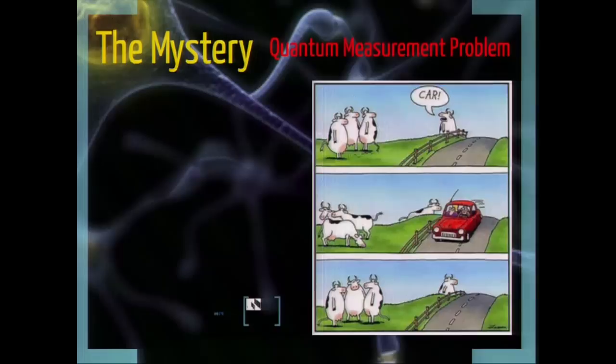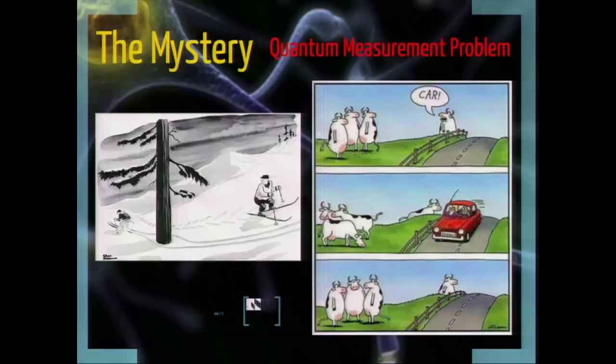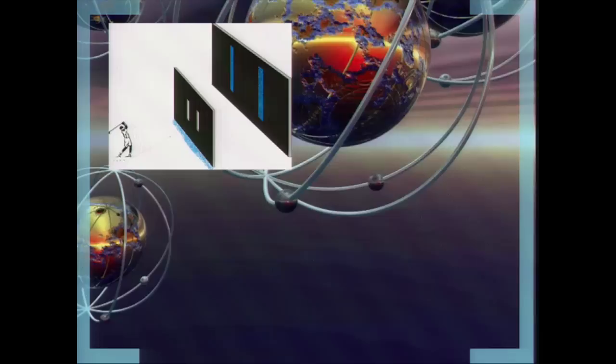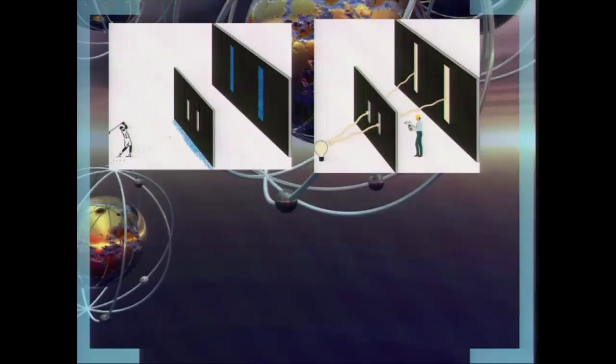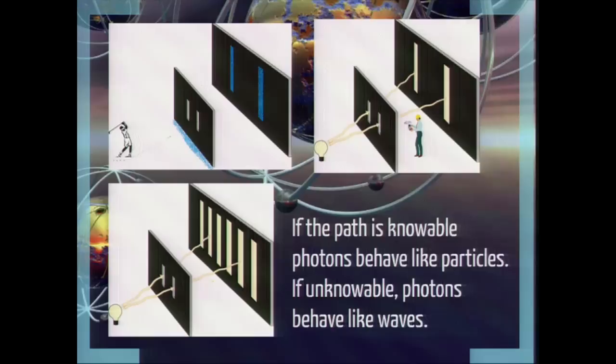If you were hitting golf balls through a double slit, you would expect them to land in two stripes on the other side. In fact, this is what happens with light or electrons as well, but only if you're watching. If you're not watching, you get the interference pattern. The upshot is, if the path is knowable, the photons will behave like particles. If it's unknowable, they behave like waves. This is part of the quantum measurement problem.